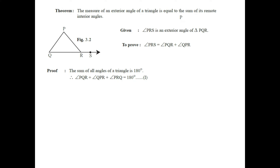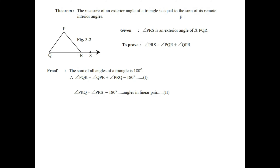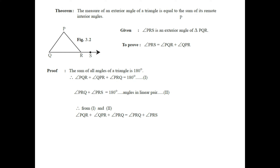Since angle PRS is an exterior angle of triangle PQR, it makes a linear pair with the interior angle PRQ. So angle PRQ + angle PRS = 180°, as these two are angles in a linear pair. We call this equation number two.